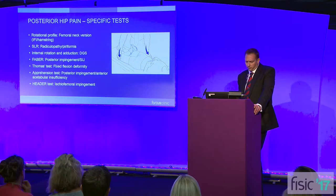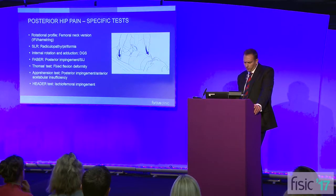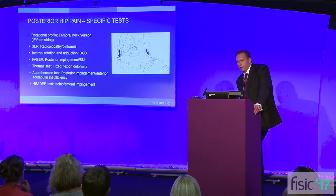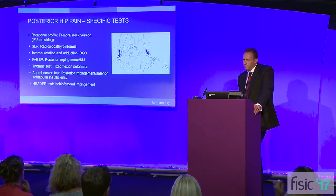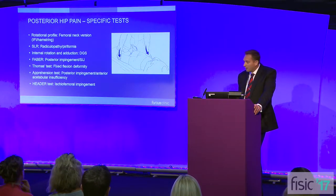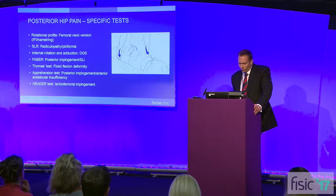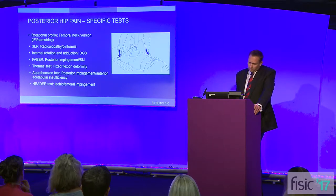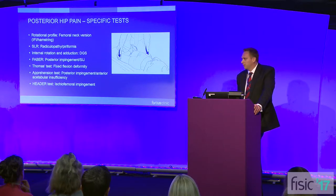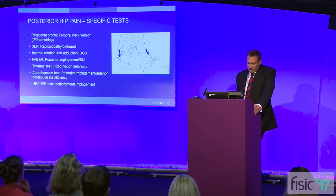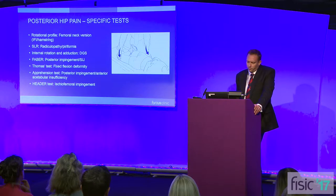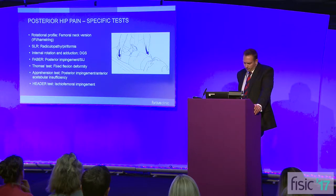I mentioned Thomas's test of fixed flexion deformity and apprehension tests. The one thing I will mention is the HEADER test, which hasn't really been described in the literature. It involves hip extension, adduction, and external rotation. This brings the lesser trochanter up to the ischium and will compress the quadratus femoris, and I feel it is one good baseline test for the patient prone, looking for IFI.